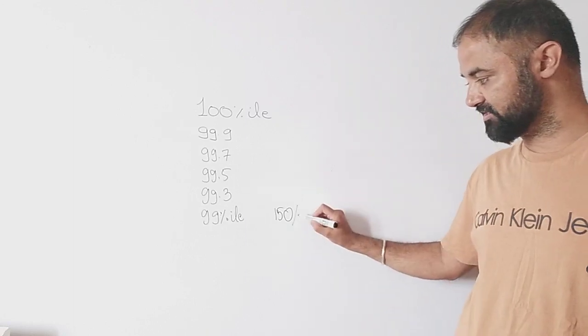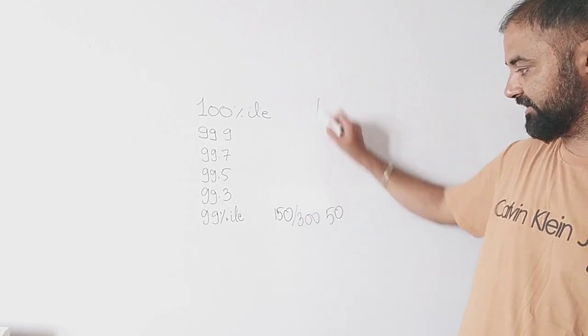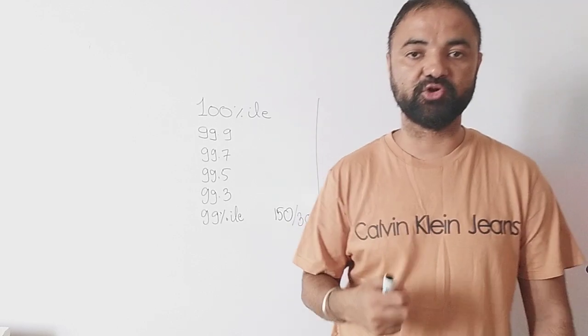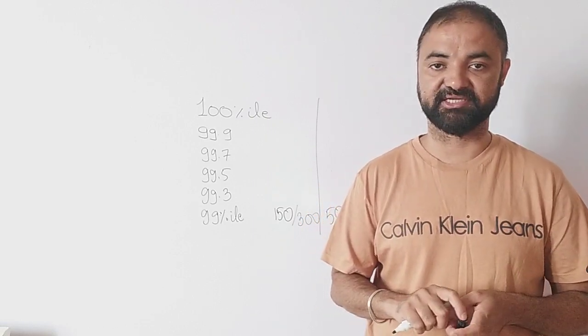All you have to do is out of 300 mark paper score 150 marks, or only do 50 questions correct. Out of 100, make 50 questions correct and your score will overtake 99 percentile.